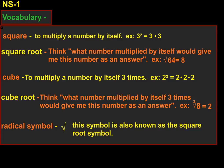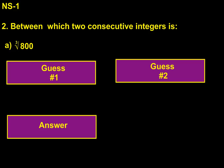Radical symbol: this symbol is also known as the square root symbol. Now we'll start by taking a look at question 2a. You are trying to figure out what two consecutive integers this particular number falls between.